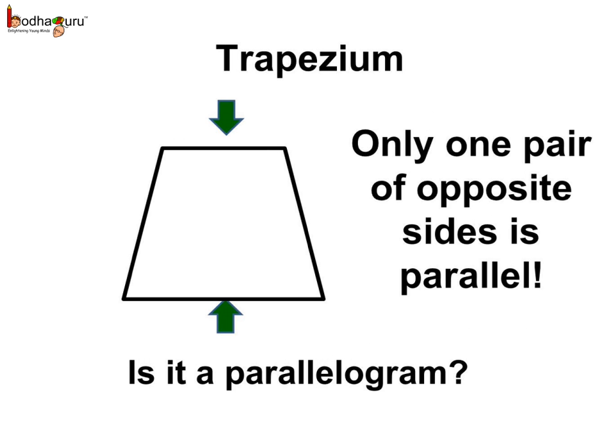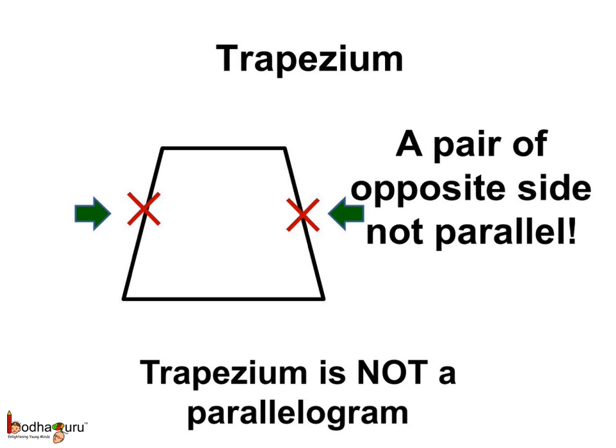Look here, this is a special type of a quadrilateral which has a pair of opposite sides parallel. Here, the two sides pointed by the green arrow are parallel. So, in this figure, only one pair of opposite sides is parallel, and this figure is called a trapezium. Can we say a trapezium is a parallelogram? Let us see. The other pair of opposite sides is not parallel — just one pair of opposite sides is parallel. Hence, we can say a trapezium is not a parallelogram.